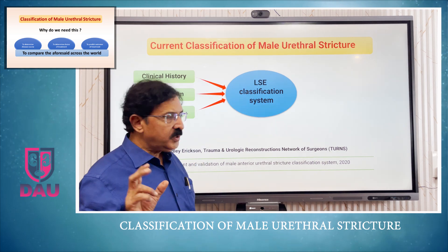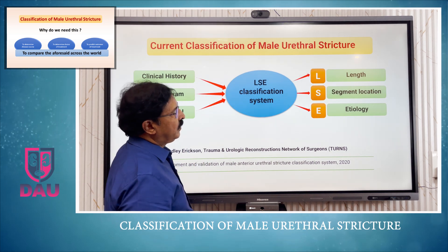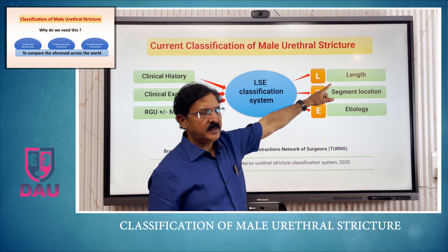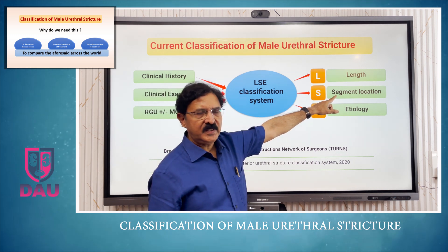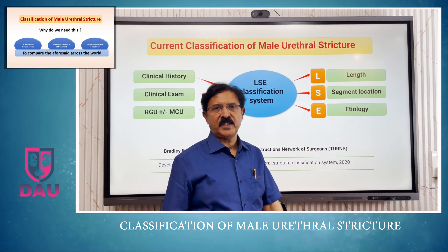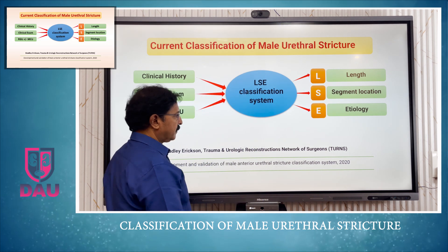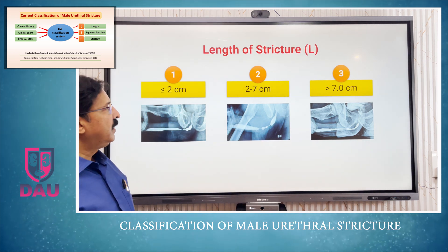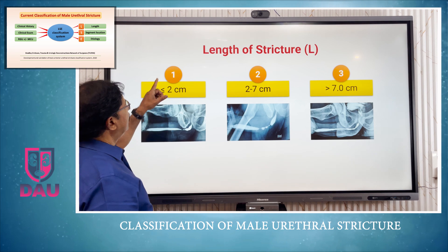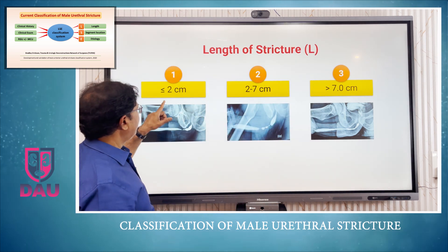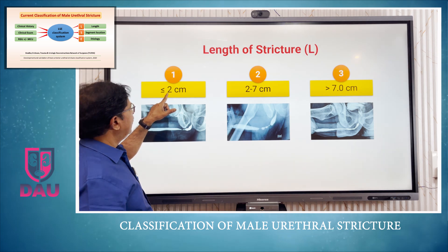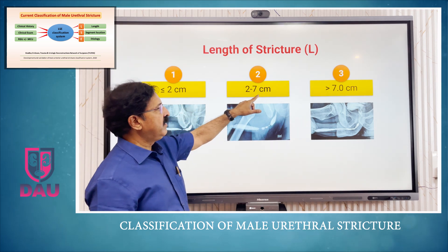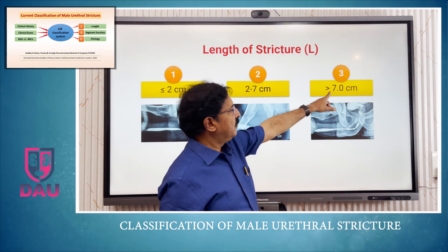Using these three methods, you arrive at three parameters. L stands for length, S stands for segment location, and E stands for etiology of the stricture. The length parameter is further subdivided into L1, L2, and L3 based on the length of the stricture: L1 is less than or equal to 2 cm, L2 is 2 to 7 cm, and L3 is more than 7 cm.